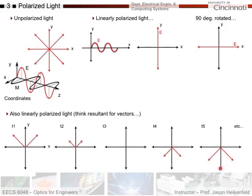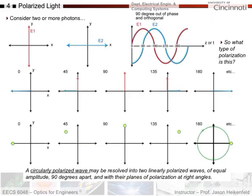If we consider two photons that are orthogonal in their polarization with a 90-degree phase delay between them, and we track the magnitudes and polarity of the E field versus angle, we see that the resultant spins. Mapping the resultant as it spins, the resulting polarization is circular and rotating with either position or time as the wave propagates. This is what we call circularly polarized light.